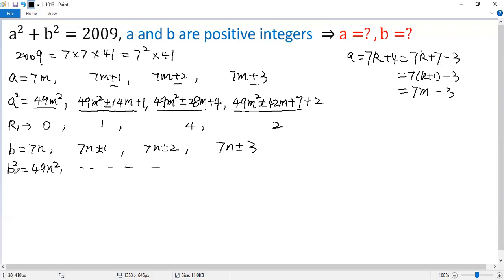So you see, when b squared is divided by 7, the remainder r2 would be 0, 1, 4, or 2 again.